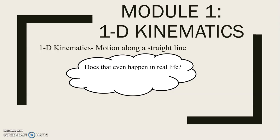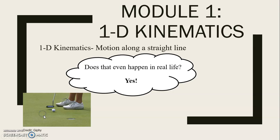So 1D kinematics is the study of motion. And there are lots of times when this happens in real life. The answer to that question on the screen is absolutely yes. This happens when you're driving your car, when you're walking down the hallway, the golf ball going into a hole, a sprinter doing the 100 meter sprint.